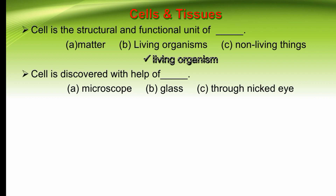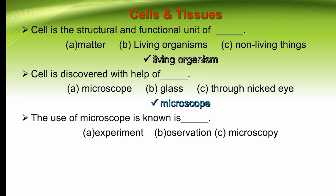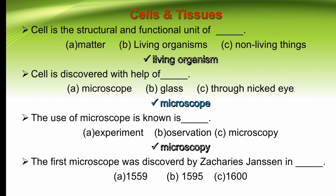Our next MCQ is: cell is discovered with the help of dash — microscope, glass, or through naked eye. Cell is discovered with the help of a microscope because it is very small and cannot be seen through the naked eye. The use of microscope is known as dash — experiment, observation, or microscopy. The right option is microscopy. Our next MCQ: the first microscope was discovered by Zacharias Janssen in dash — 1559, 1595, or 1600. The first microscope was discovered in 1595. The right option is B.